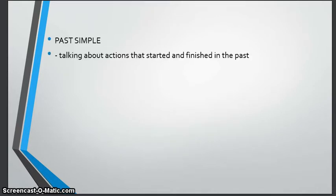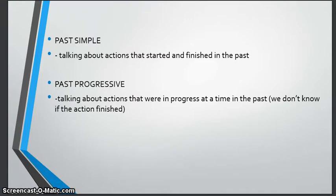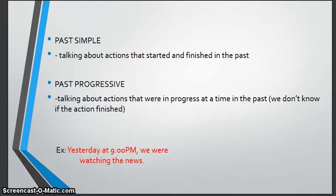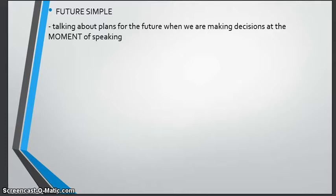Then we have past simple. We use past simple when we are talking about an action in the past and we know when it started and when it finished. We use past progressive to talk about an action in the past that was in progress, but we don't know if it finished — like 'yesterday at 9 p.m. we were watching the news.'